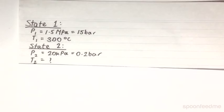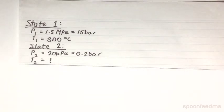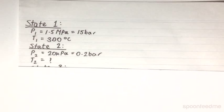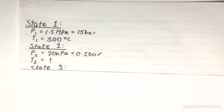So now the pressure at state 1 is 1.5 MPa, which is 15 bar, and the temperature is 300 degrees Celsius. Our pressure at state 2 is 20 kPa, which is 0.2 bar, and our temperature is as yet unknown.